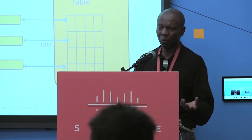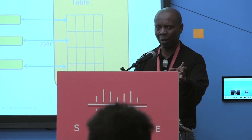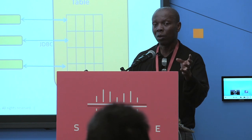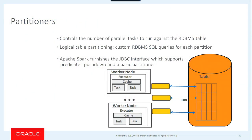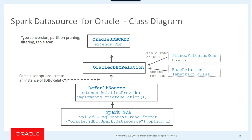The built-in JDBC interface provides predicate pushdown — the WHERE clause can be pushed down to the RDBMS. Remember, we don't want to ship the whole table to Spark; we want to push down the predicate to the RDBMS and only retrieve the result set. It provides some predicate pushdown and basic partitioning capabilities — that's what you have out of the box. But the problem is it's not enough. So all database vendors — Microsoft, IBM, Oracle — and NoSQL vendors like Cassandra are coming up with their own Spark connectors that go beyond the built-in solution.